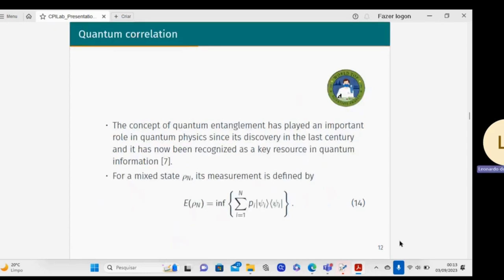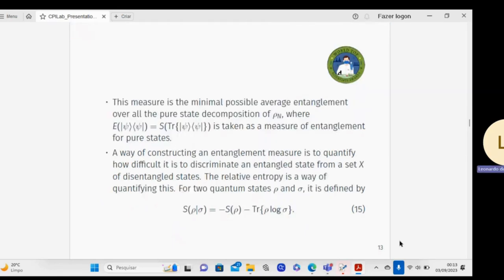Quantum correlation: The concept of quantum entanglement has played an important role in quantum physics since its discovery in the last century, and it has now been recognized as a key resource in quantum information. For a mixed state, its measurement is defined by equation 14 in the von Neumann entropy.